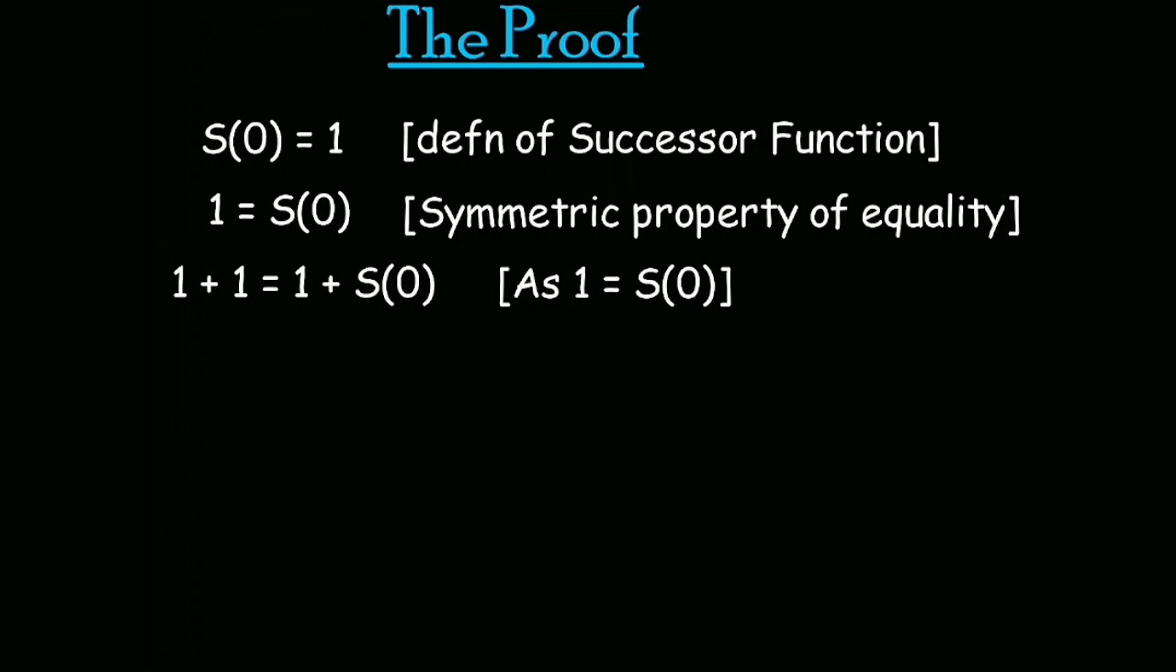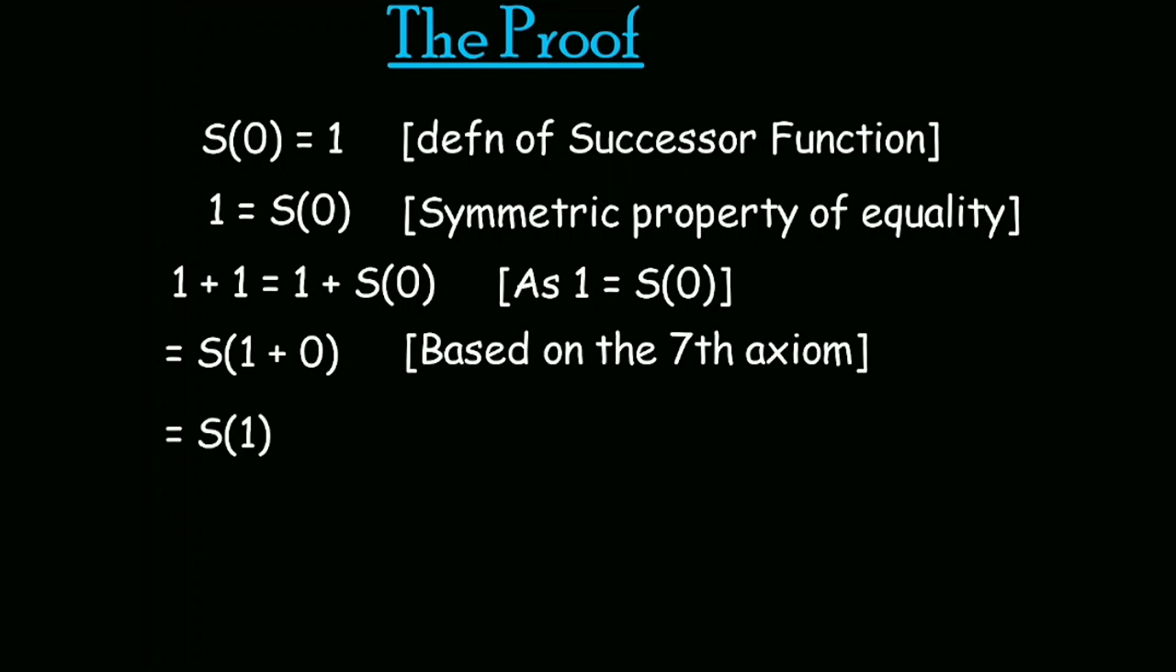Now we can write this 1 plus successor of 0 as successor of 1 plus 0, based on our seventh axiom, which says that for all natural numbers a and b, a plus successor of b is equal to successor of a plus b. Now this successor of 1 plus 0 is equal to successor of 1 based on our sixth axiom, which says that a plus 0 equals a for all natural numbers a.